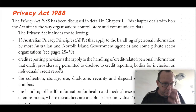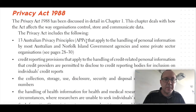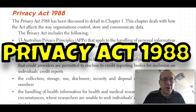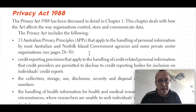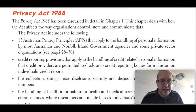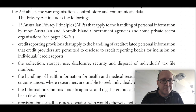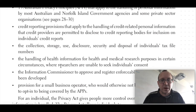So the big one: Privacy Act 1988. The Privacy Act includes the following. It has 13 Australian Privacy Principles — you can see those in chapter one — and they apply to the handling of personal information by most Australian and Norfolk Island government agencies and some private sector organisations. It also includes credit reporting provisions that apply to the handling of credit-related personal information.